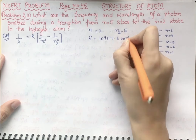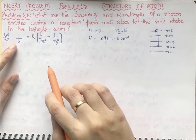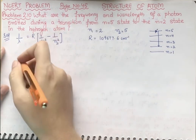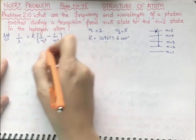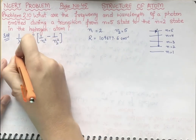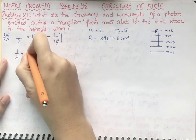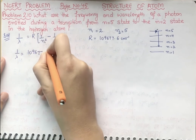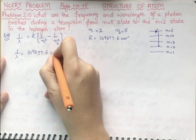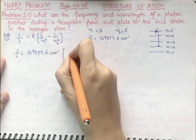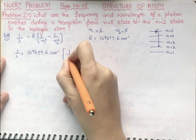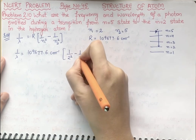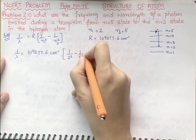Rydberg's constant R is equal to 109,677.6 centimeter inverse. First of all, we will find the wavelength. So, 1 by lambda — we will put the values: 1 by lambda equal to 109,677.6 centimeter inverse times (1 by 2 squared minus 1 by 5 squared).